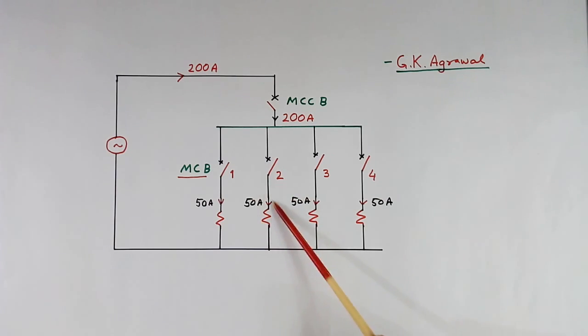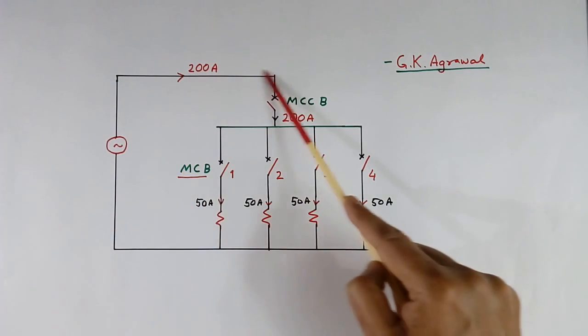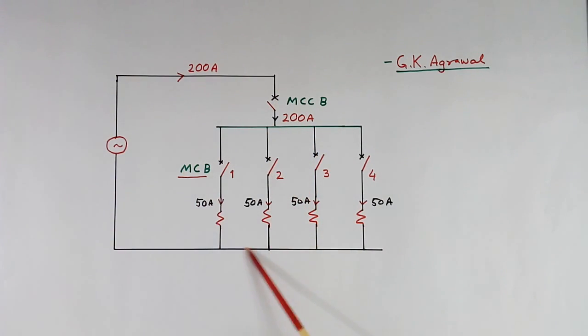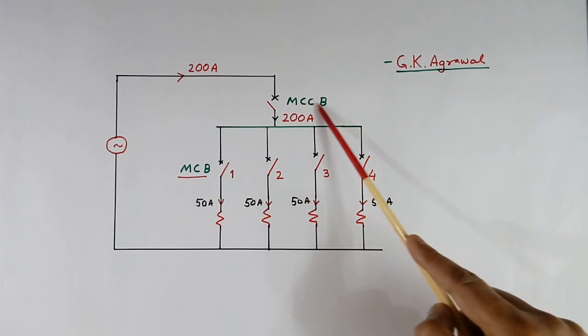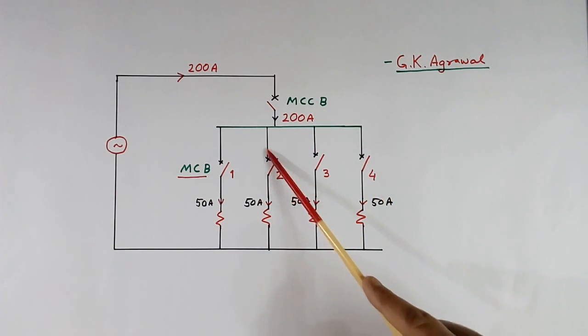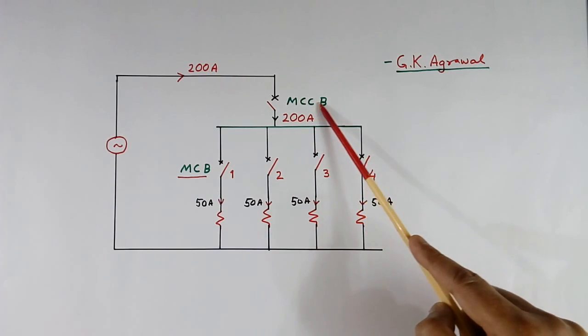This current flows like this. So this current is flowing in this MCCB and this MCB. So all load currents are flowing from different MCBs but through a common MCCB.